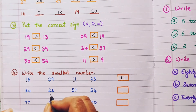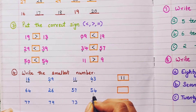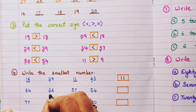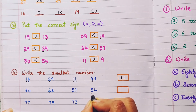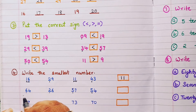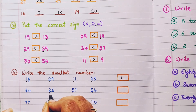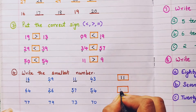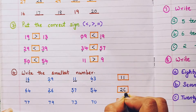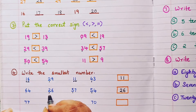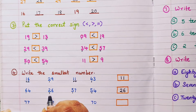Next group: 64, 26, 57, and 54. Check the tens place: 6, 2, 5, 5. The smallest tens digit is 2, so 26 becomes the smallest number. Remember: first compare the tens digit, then move to the ones digit if the tens place is the same.